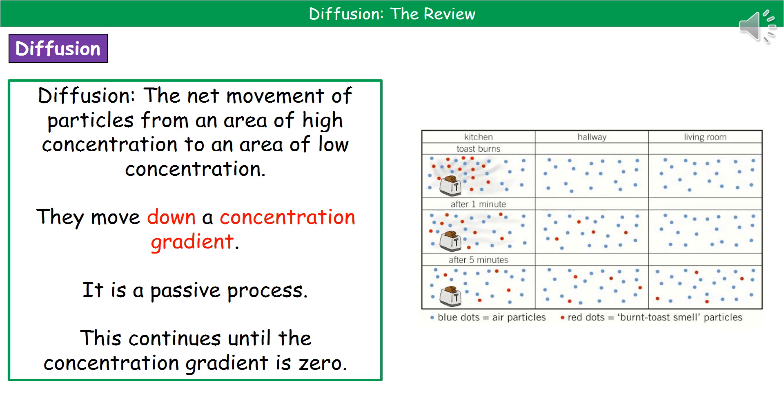So this used to come up on the old specification as one of those questions they could ask you. So make sure that you learn that diffusion is the net movement of particles from an area of high concentration to an area of low concentration.